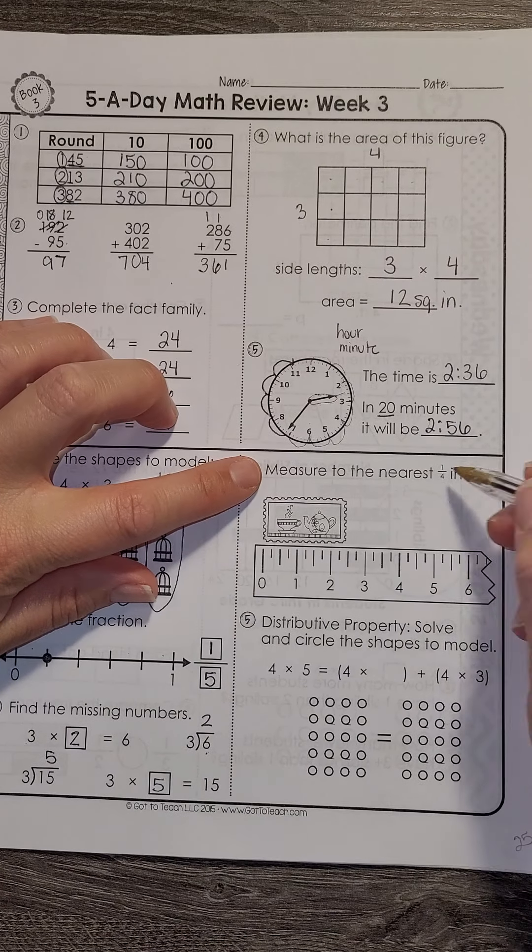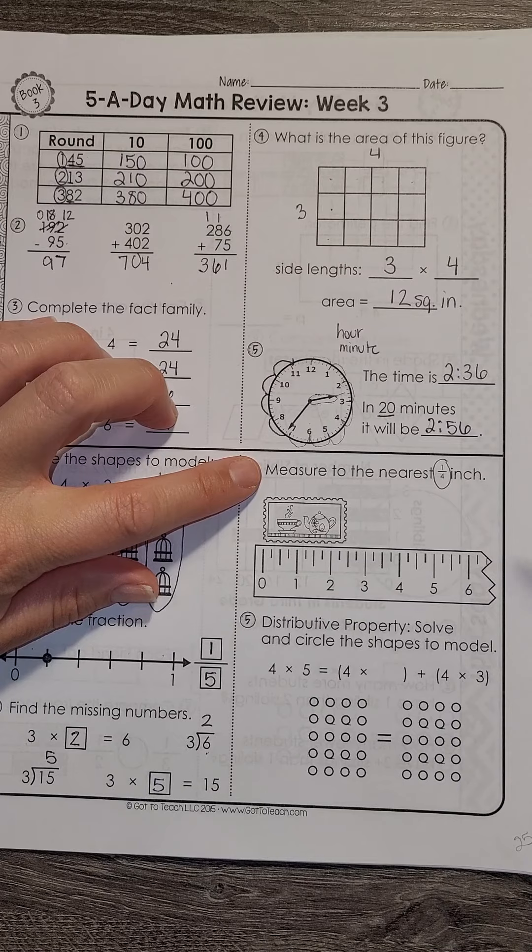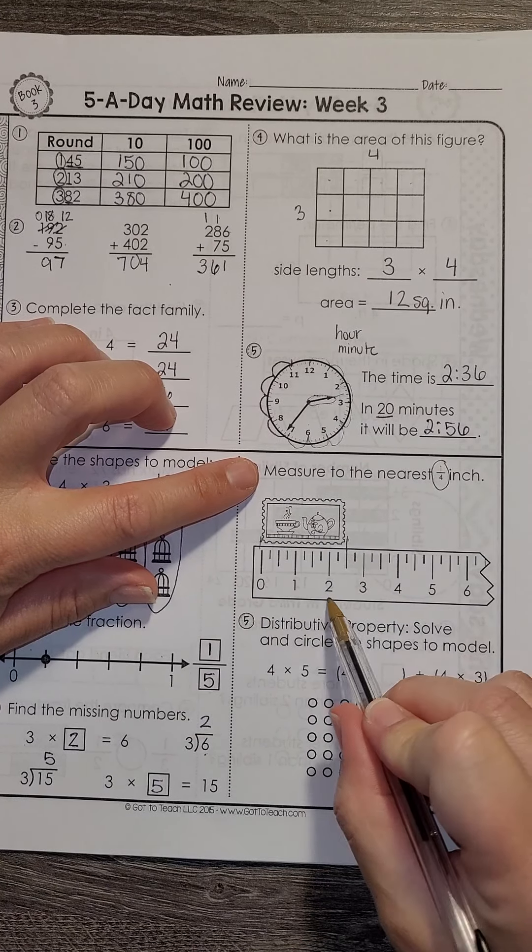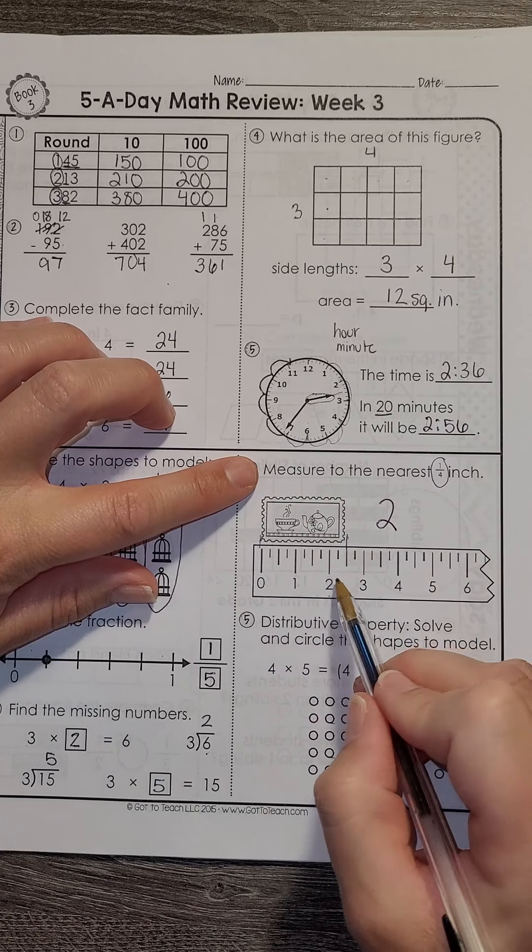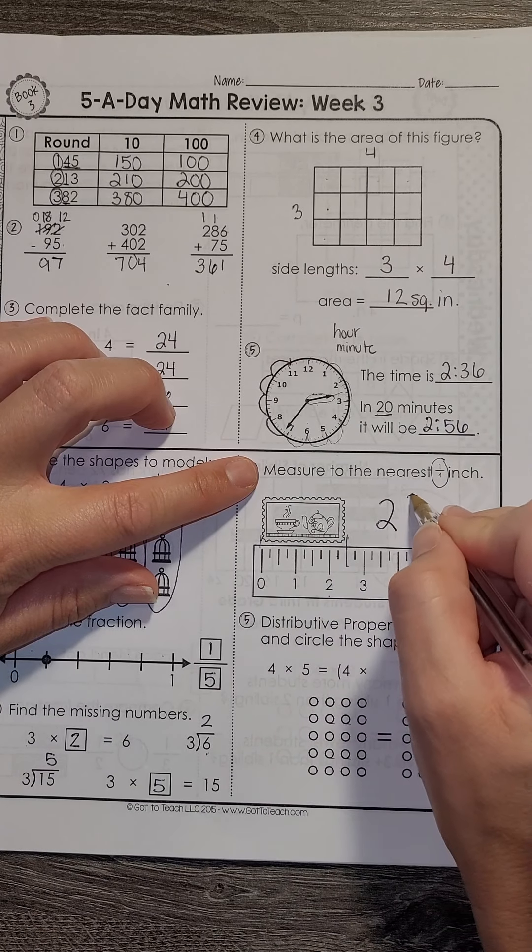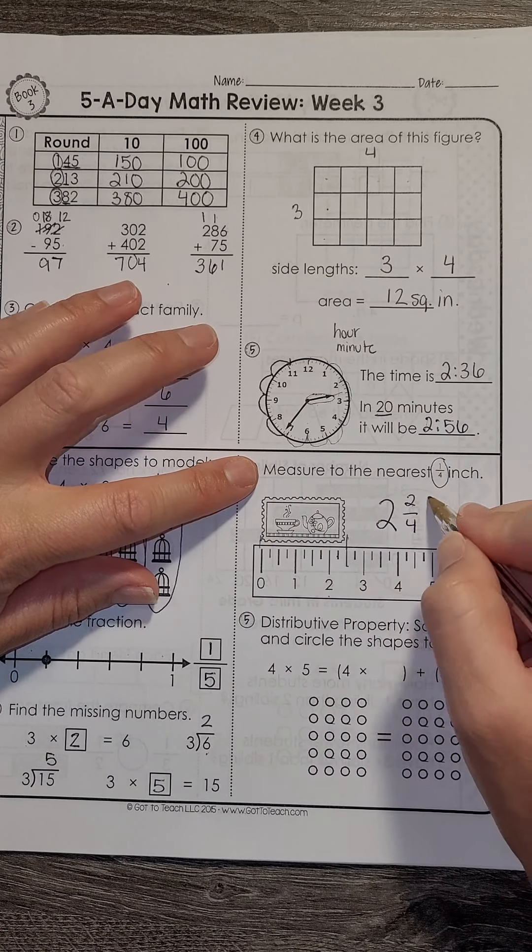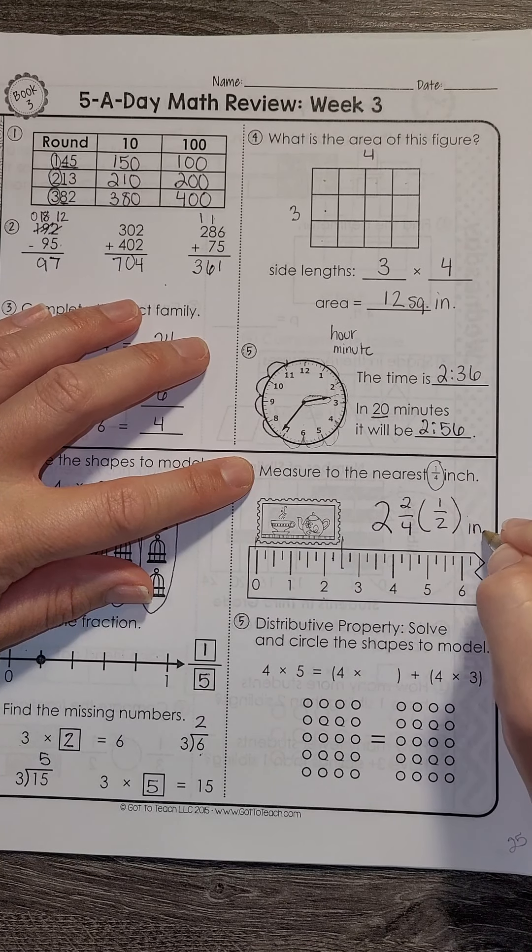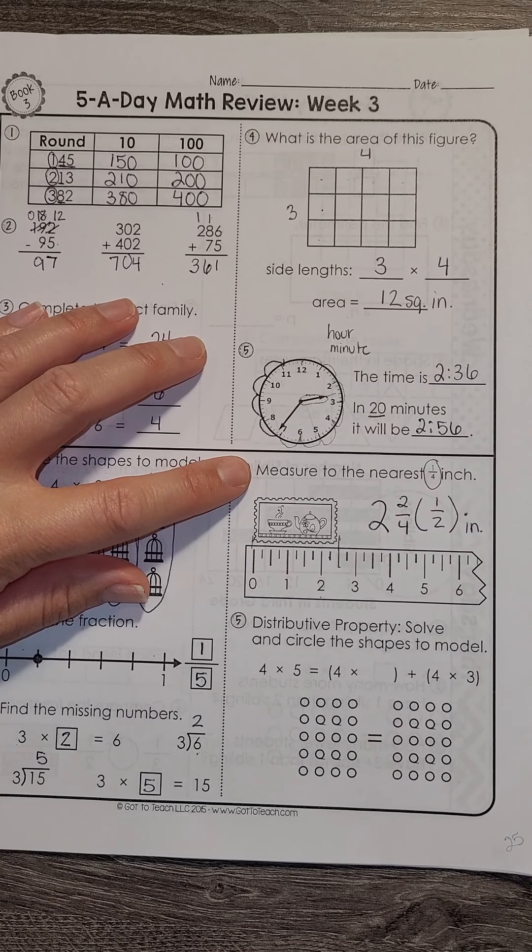Measuring to the nearest fourth of an inch. We check it's at 0. I go and look at the end. I am past the 2 inch mark and I am 1, 2 fourths of the way down. You could have also called this a half. I would have taken 2 and 2 fourths or 2 and a half inches.